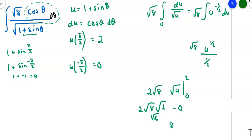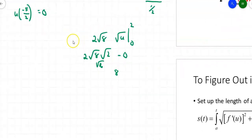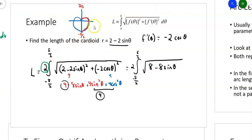We're not quite done — going back to the beginning, there was that factor of 2 we set aside when using symmetry. Multiplying: 2 times 8 gives 16. So 16 is the length of the cardioid all the way around. We integrated from −π/2 to π/2, got a value, then doubled it to find the full length.